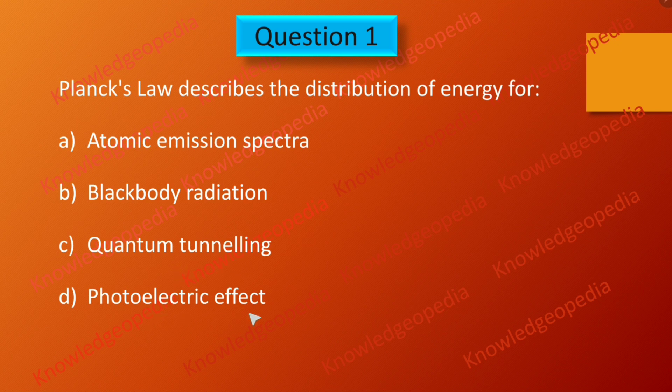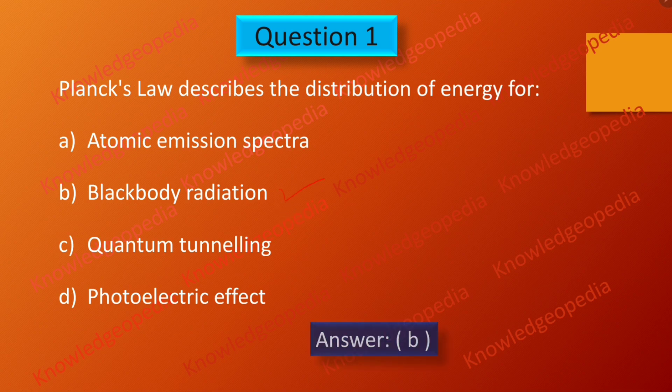quantum tunneling, and photoelectric effect. As we have discussed in our lecture series, this Planck's law describes the distribution of energy for blackbody radiation. So the correct option is B, that is blackbody radiation.